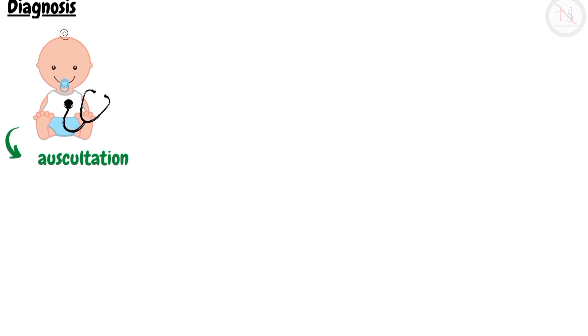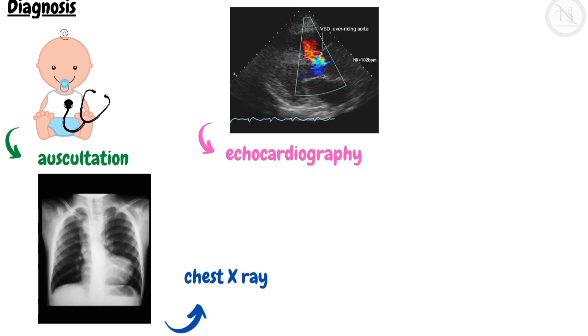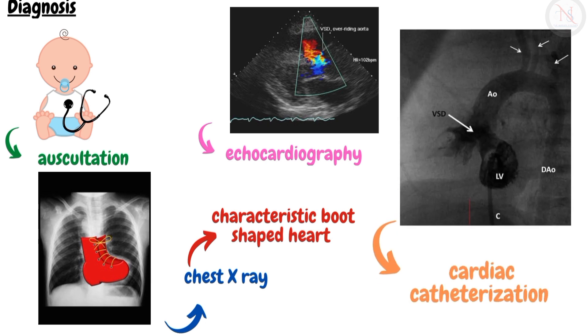Diagnosis of tetralogy of Fallot includes auscultation to listen to the harsh systolic murmur. Echocardiography shows the ventricular septal defect, overriding aorta, and pulmonic stenosis. Chest X-ray will show a characteristic boot-shaped heart because of right ventricular hypertrophy. Cardiac catheterization can also be used to diagnose tetralogy of Fallot.